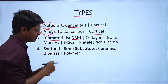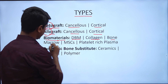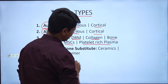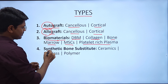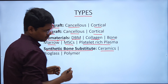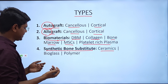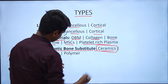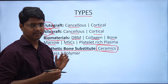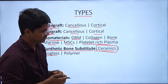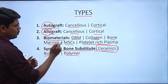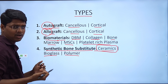Biomaterials include: DBM (demineralized bone matrix), collagen, bone marrow aspirate, MSC (mesenchymal stem cells), and platelet-rich plasma. There are also synthetic bone substitutes in four major classes: ceramics, extracellular matrix (ECM), bioglass, and polymer. Much research is being conducted in this area. Simply remember the four main categories: autograft, allograft, biomaterials, and synthetic bone substitutes.